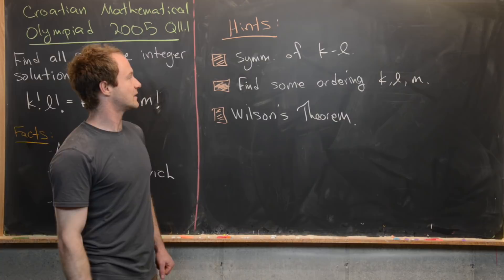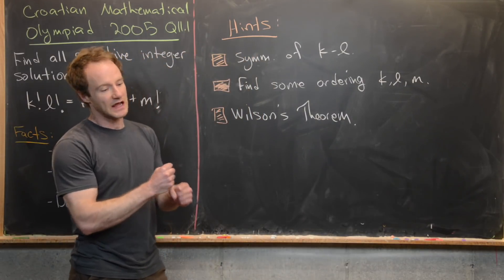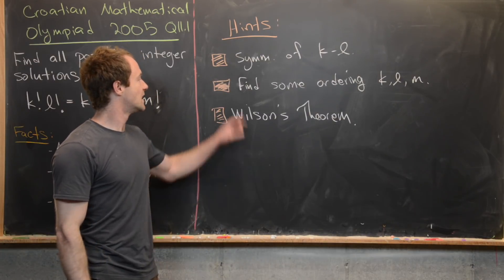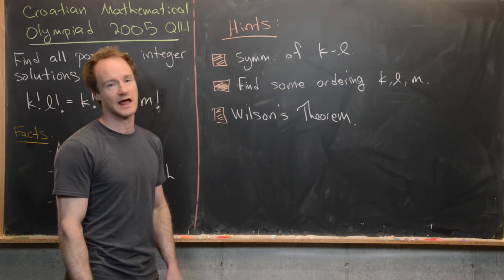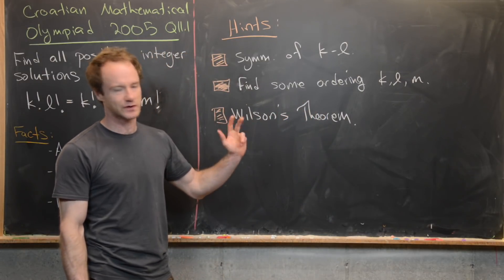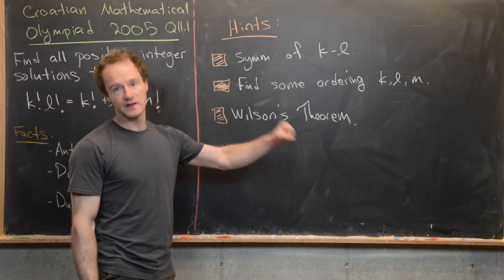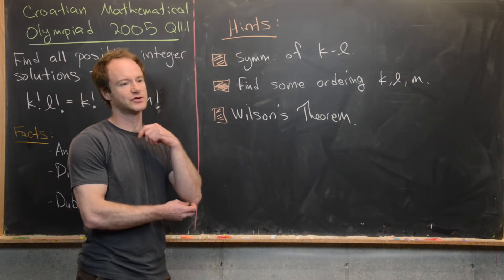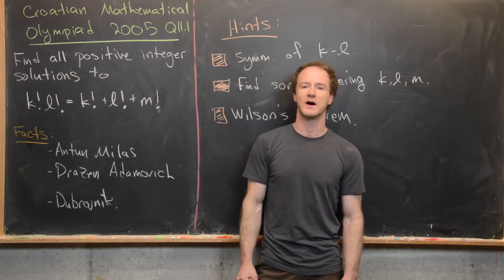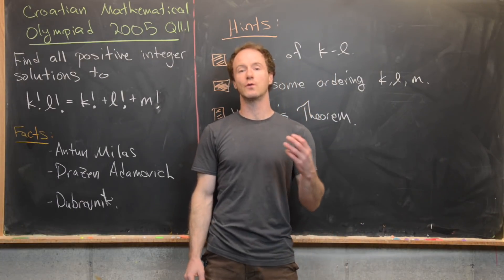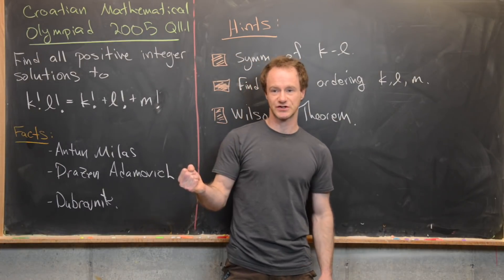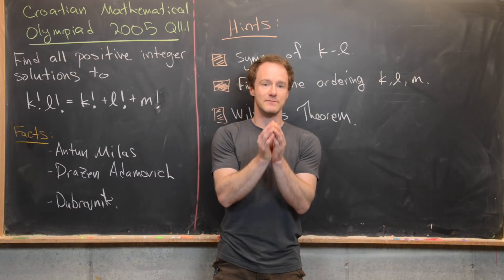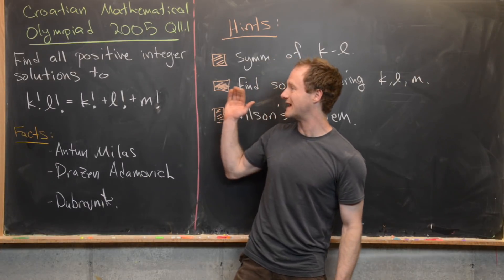Some hints: first, notice that this equation is symmetric in k and l — they're playing the same role — so we might as well assume one is less than or equal to the other. We also want to find some ordering between k, l, and m: is m larger, smaller, or is there total freedom? Next, I think it's really nice to use Wilson's theorem here. Finally, when solving equations over positive integers like this, there's generally only one solution — sometimes zero, sometimes two or three — but the most probable outcome is a single solution, which is exactly what we'll see.